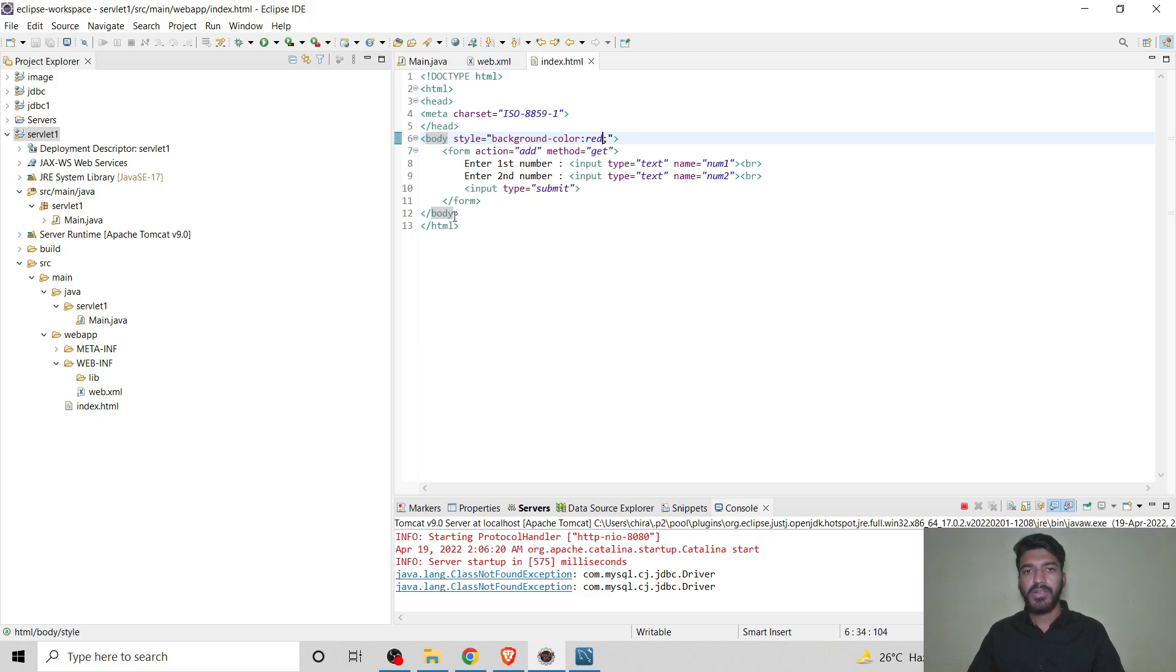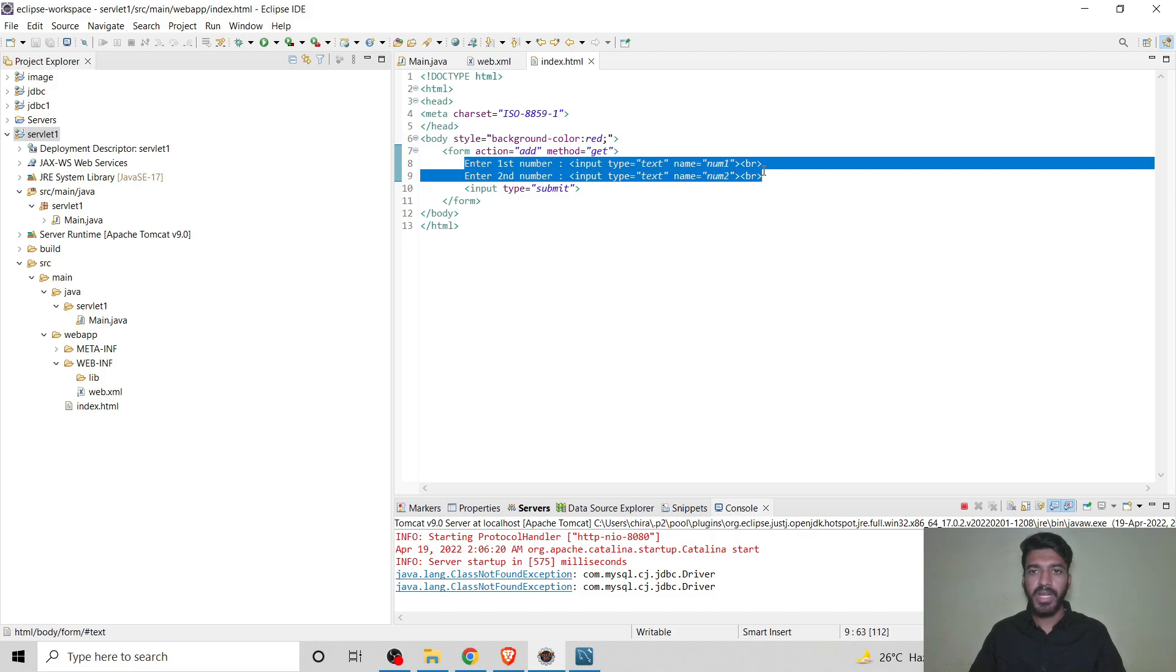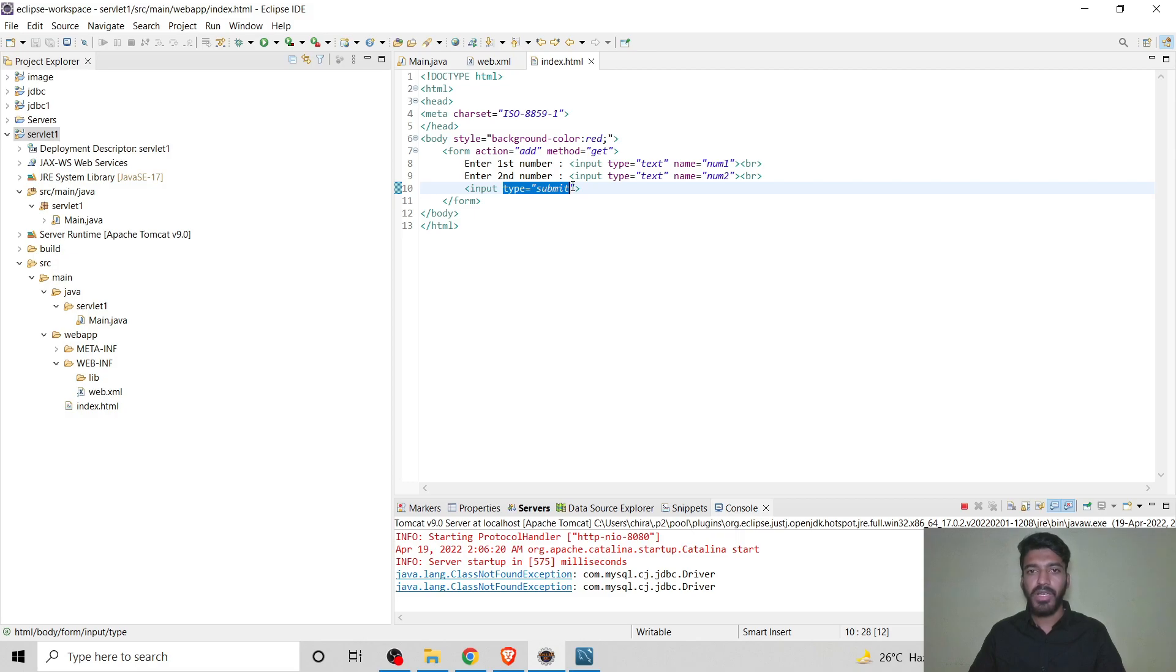Let's see our code. In the HTML form, I have created a form whose action is add. These are the two numbers, num1 and num2, which will be entered by the user, and there is a submit button. When the user clicks the submit button, the form will redirect to the main.java file.